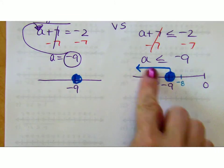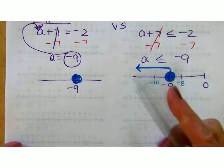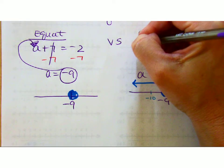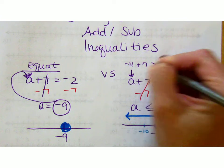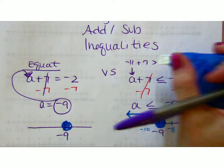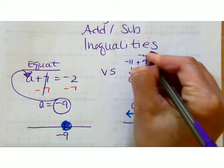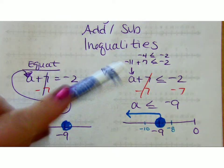How would we check this? I would pick a number somewhere in this solution set, plug it in for A and see if it's true. So how about negative 11? Is negative 11 in our solution set? Yeah. So when I put negative 11 right here, I get negative 11 plus 7, is that less than or equal to negative 2? Is negative 4 less than or equal to negative 2? Sure is. So negative 11 is a solution.